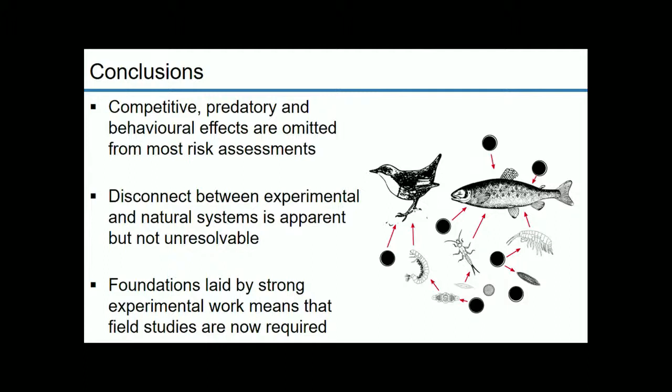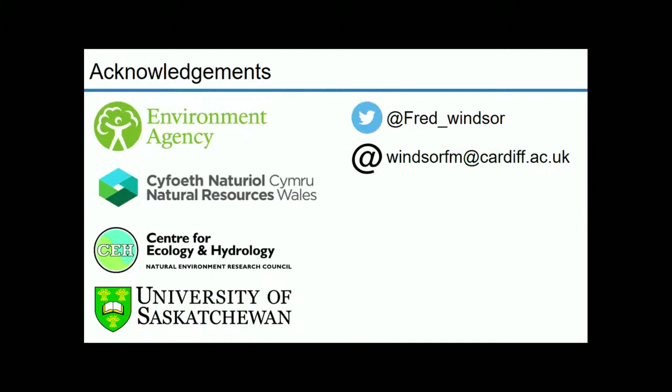In conclusion: competitive, predatory, and behavioral effects are generally omitted from most current risk assessments. The disconnect between experimental and natural system research is apparent, but it's easily resolved. The foundations laid by a strong experimental understanding of endocrine disruption have laid the groundwork to continue working within the natural system and provide this circular, self-informing, multi-tiered research strategy.